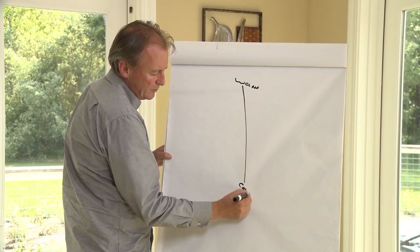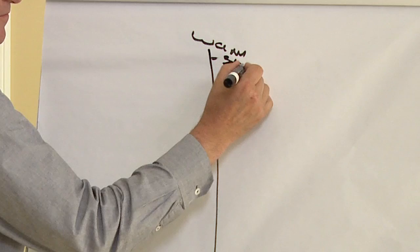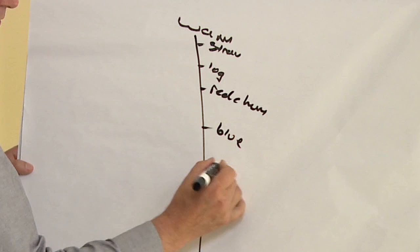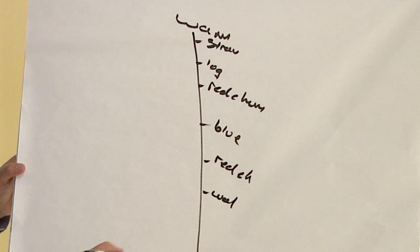So high-end warm fruit in my mind would be like strawberry, loganberry. As we get cooler, cherry, blueberry, red cherry, and then we use a term walnut which is often associated with Zinfandel and Petit Sirah, black cherry, and then finally we get down to blackcurrant.